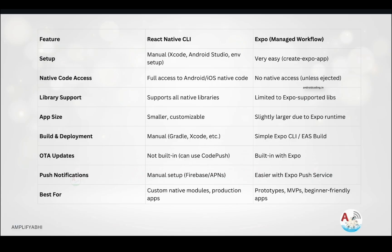Expo is a framework that provides built-in functionalities so you can easily create applications without going deep into boilerplate code. With React Native CLI you start from the root level. Regarding native code access: with React Native CLI you get full access to Android and iOS native code, but with Expo you cannot get full access to native functionalities unless you eject.